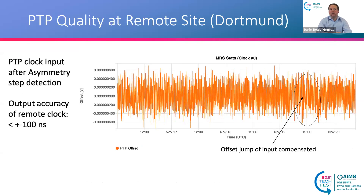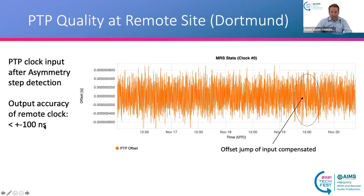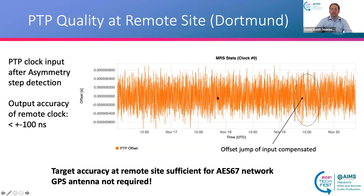The result shows what the clock does with this input signal: it removed the offset step and stayed at the same phase. For AES67, the absolute phase is not of primary importance since you only need to regenerate a word clock frequency from it, so the constant time error was not a major concern. The problem would only have been if the step remained, but it was removed. The output accuracy of the remote clock serving local clients is still below 100 nanoseconds — comparable to a GNSS-synchronized grandmaster, but without the need for a GNSS or GPS antenna.